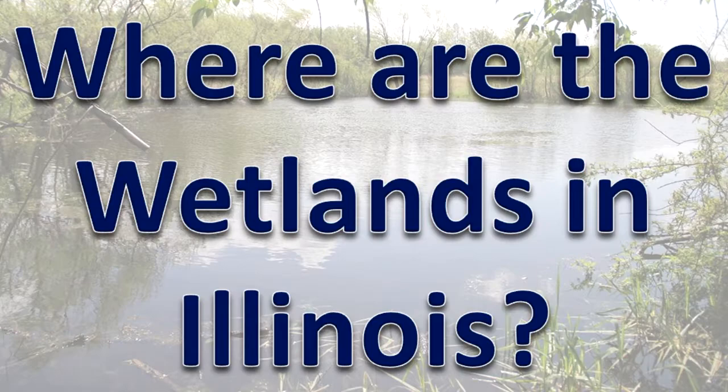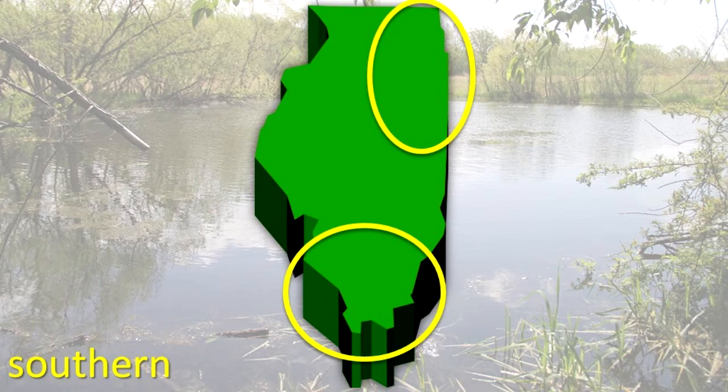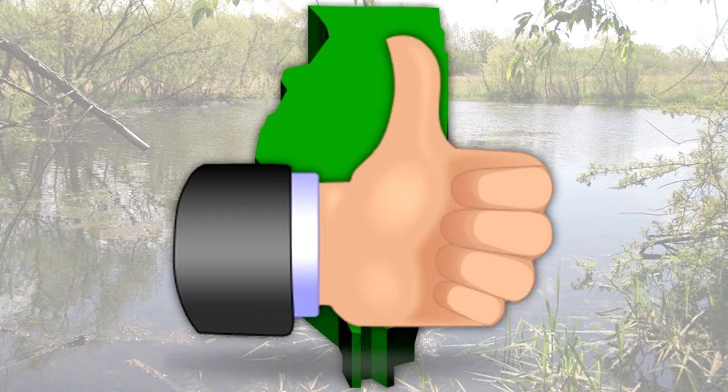Where are the wetlands in Illinois? Most wetlands in Illinois are in the northeastern and southern parts of the state and along the Illinois River. However, all counties in Illinois have wetlands.